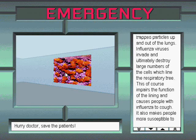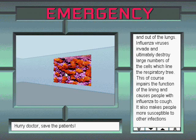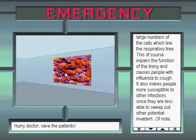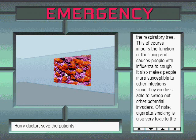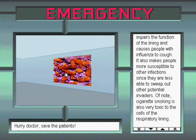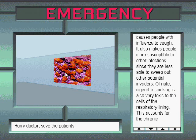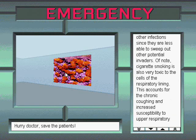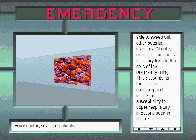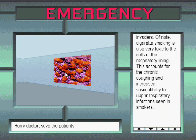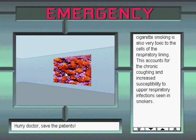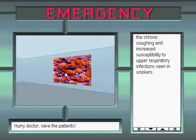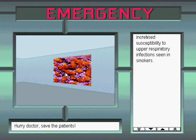Influenza viruses invade and ultimately destroy large numbers of the cells which line the respiratory tree. This impairs the function of the lining and causes people with influenza to cough. It also makes people more susceptible to other infections since they are less able to sweep out other potential invaders. Of note, cigarette smoking is also very toxic to the cells of the respiratory lining. This accounts for the chronic coughing and increased susceptibility to upper respiratory infections seen in smokers.